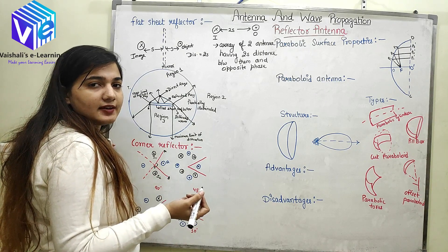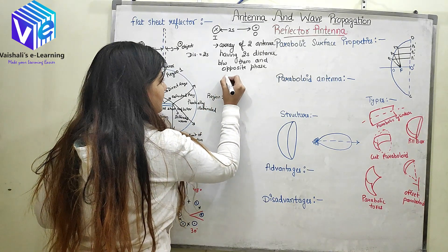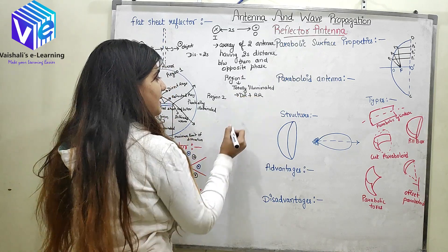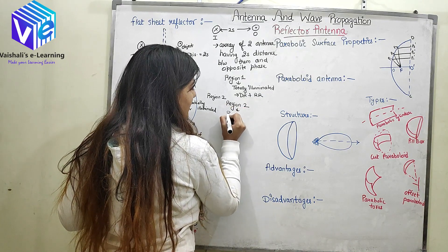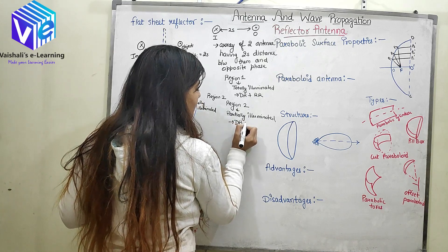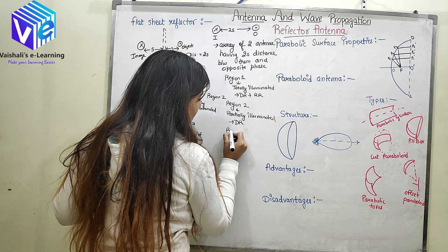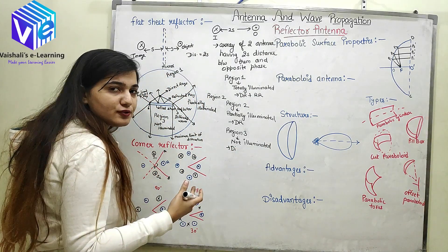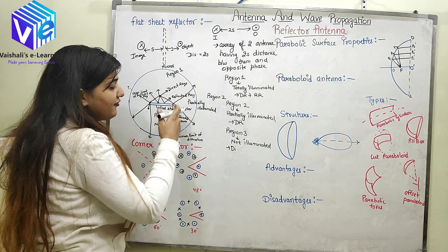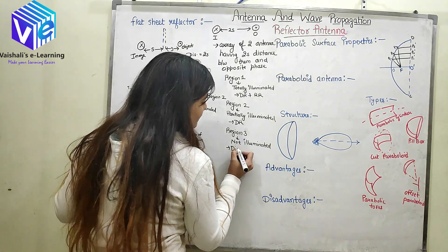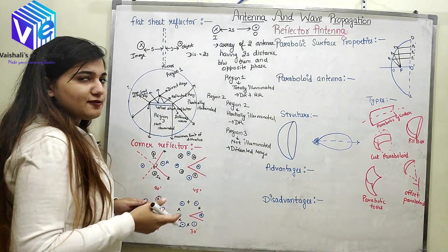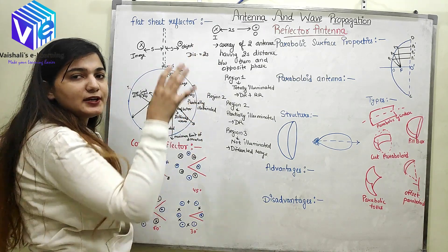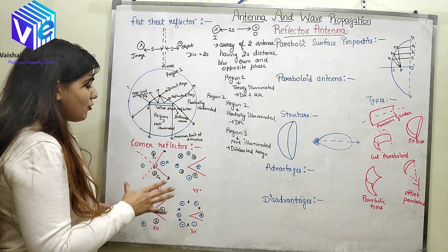Region 3 is not illuminated at all. To summarize: region 1 is totally illuminated with both direct and reflected rays present. Region 2 is partially illuminated with only direct rays and no reflected waves. Region 3 is not illuminated — only diffracted rays are present, and since diffracted rays at corners are very few, region 3 is essentially dark. The flat sheet reflector acts like a flat mirror and produces an array of two antennas, which increases directivity.